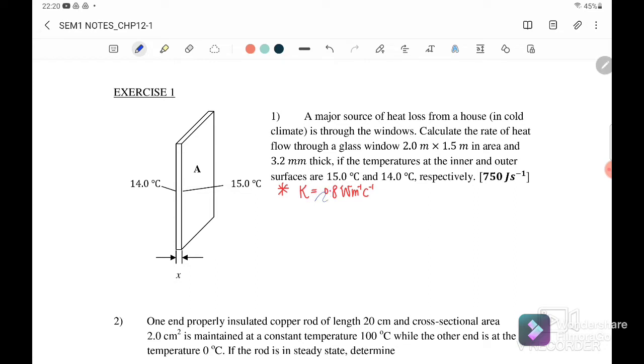For question number one, please add the thermal conductivity k, because the question does not give k. So please add the thermal conductivity k equals 0.8 W/(m·K). We want to find the rate of heat flow.